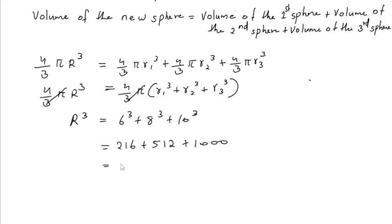Adding together we get 1728. So R is equal to cube root of 1728, which is equal to 12. So the radius of the new sphere is 12 centimeter.